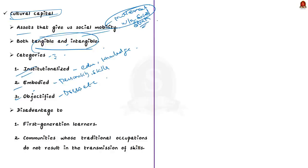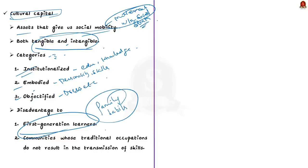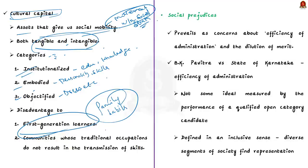The court holds that cultural capital ensures a child is trained unconsciously by their family environment to take up higher education or higher posts that correspond with their family standing. This works to the disadvantage of individuals who are first-generation learners. The judgment is attentive to the implications of family habits, community linkages, and inherited skills, and in this context reservation is a necessity for people who face these kinds of barriers.